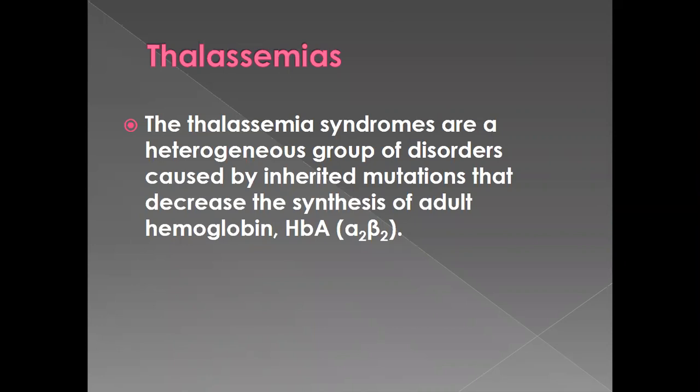Today we are going to discuss Thalassemia. In the previous lecture we had gone through another important hemolytic hereditary disease which had a problem with the red cell membrane — hereditary spherocytosis — in which the membrane proteins spectrin, ankyrin, band 3.2, and band 4 were deficient or defective. That led to a change in the shape of the red cells, making them spherocytic, and they were responsible for extracorpuscular hemolysis within the spleen because of this shape change.